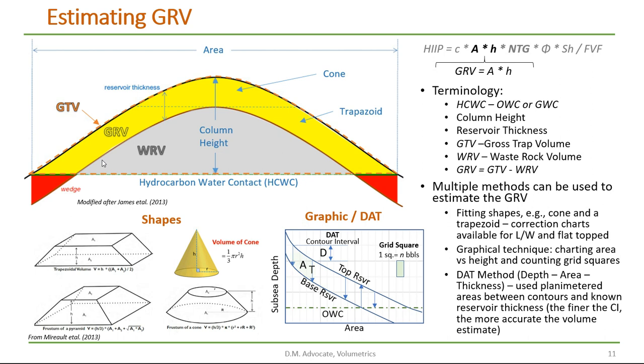If we take the waste rock volume and subtract it from the gross trap volume, what will be remaining is the gross rock volume. There are three other methods for estimating the gross rock volume.